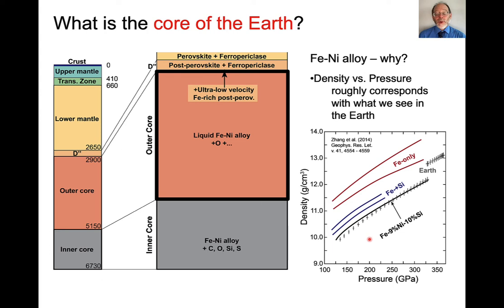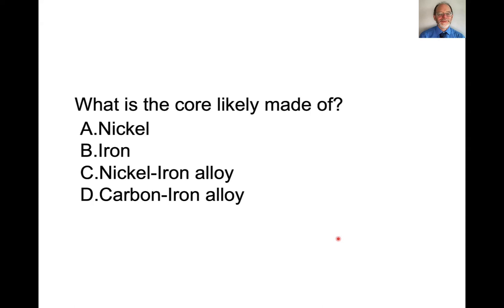It's not just what we see in meteorites. It's also that we can infer the density structure as a function of pressure going into the Earth. And what we find is that a core that is iron only has too high a density for the different pressures and that it needs to be diluted with different materials. So if we take iron and add 9% nickel and about 10% silicon, then we get a density versus pressure structure that looks like what we observe on Earth, which are these pluses in here. So what is a core likely made of? And the answer is nickel iron alloy, mostly.